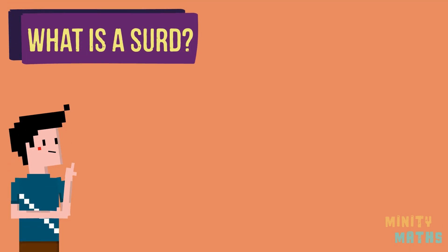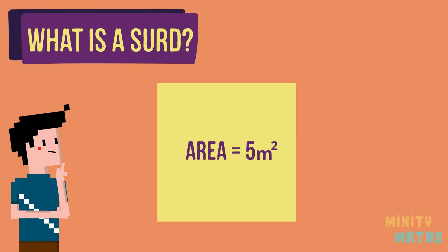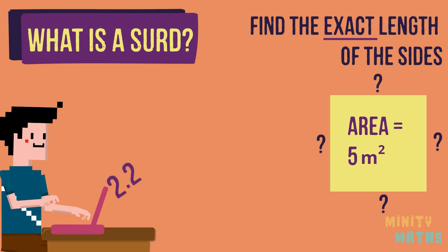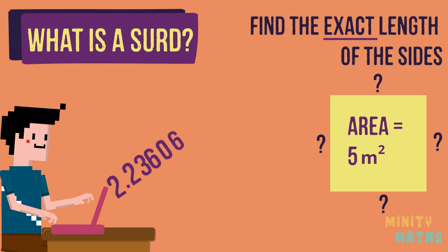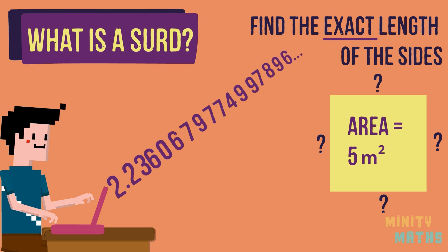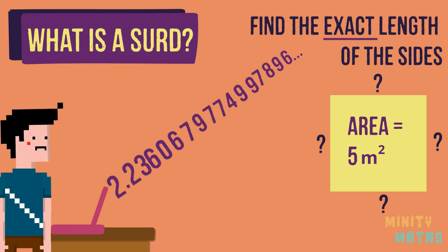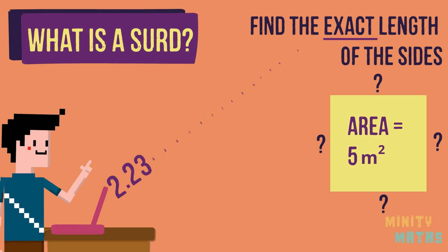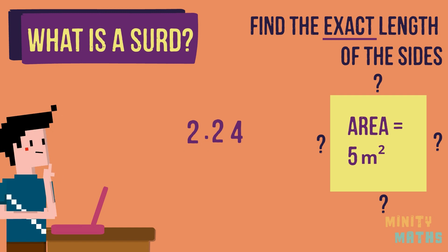What is a surd? Let's start by having a look at this question: what is the exact length of the side of this square with an area of five meters squared? Well, it is practically impossible to write the exact length out using a decimal number, as you would be writing the number out for the rest of your life — and even then you still wouldn't have finished it. You could round the number to two decimal places or even to a whole number, but then this won't be an exact answer to the question; it will be an approximate answer.